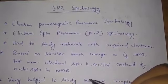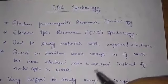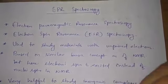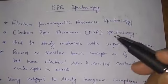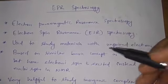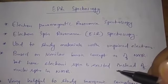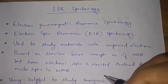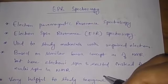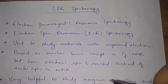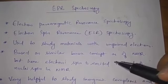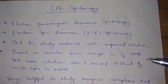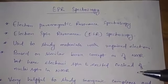In NMR spectroscopy, in the presence of an external magnetic field, the nucleus gets excited from the alpha state to the beta state — that's how the transition happens. But in EPR, the electron spin is considered, not the nucleus spin. That is the major difference between NMR and EPR.